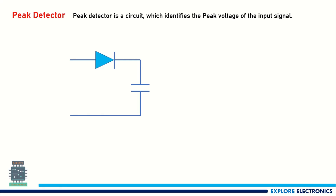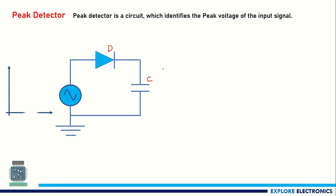The circuit consists of a diode D and a capacitor. If we apply an input signal that varies over time, we can identify the peak voltage, or the maximum voltage, from this signal.